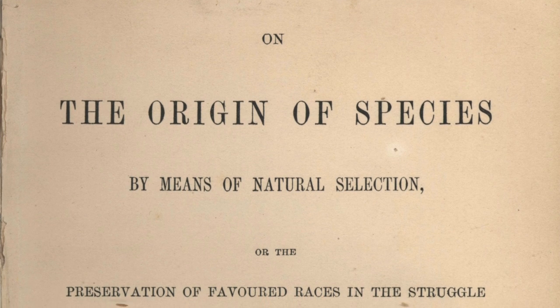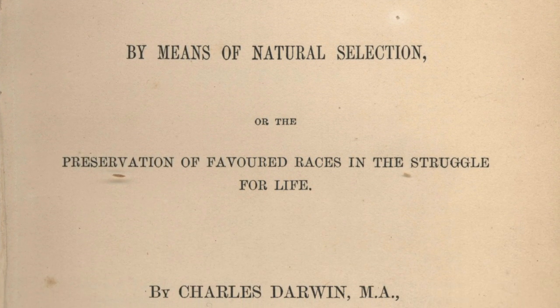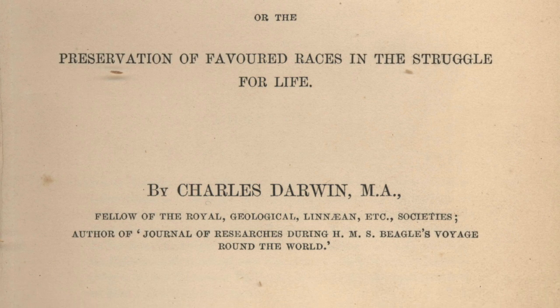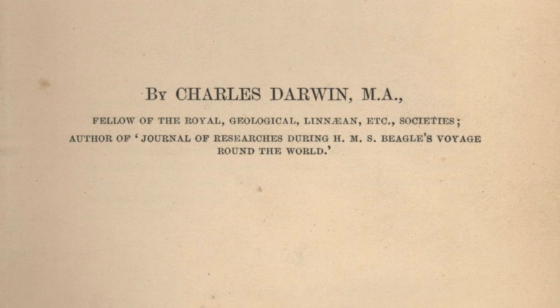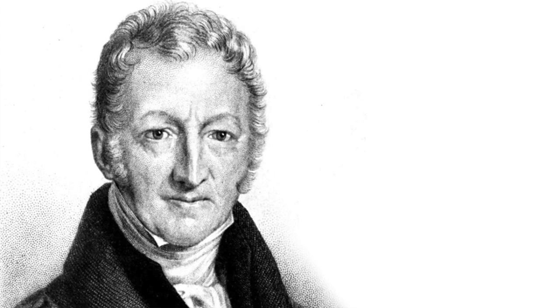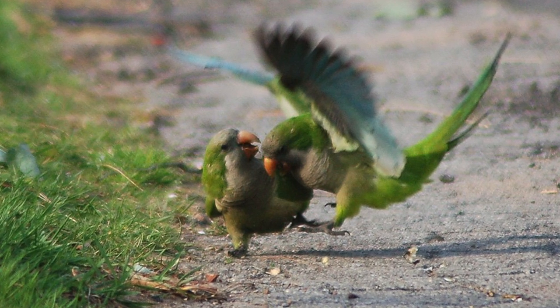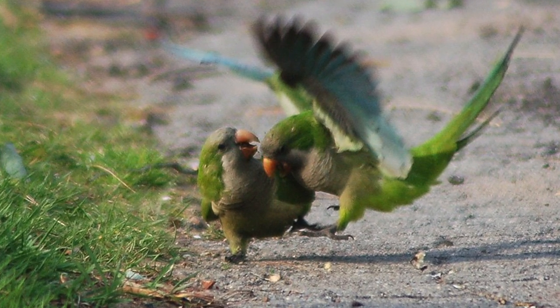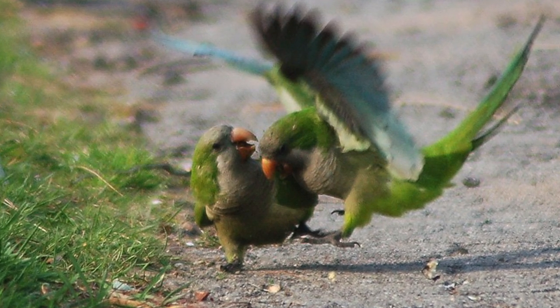In 1859, Charles Darwin published On the Origin of Species. In this, he put forth the idea of organic evolution — natural changes in plant and animal life as time evolves. He takes something of a Malthusian view: there is a growing population of animals competing for a finite set of resources like food, and therefore there's a competition, and when there's a competition, not everything can survive.